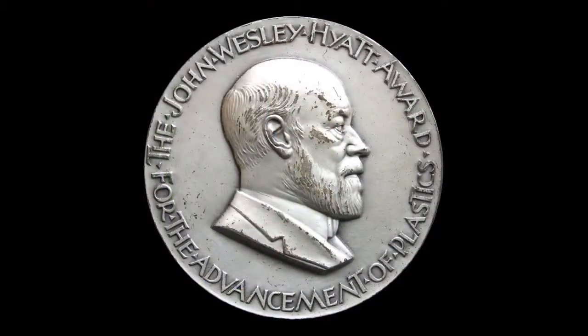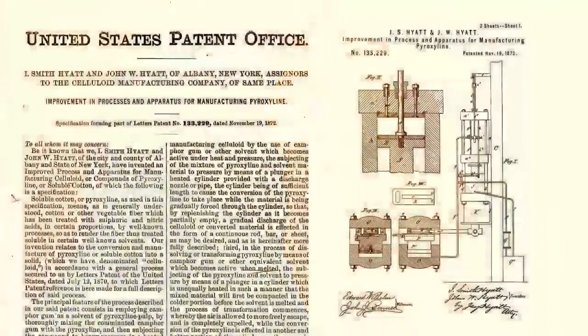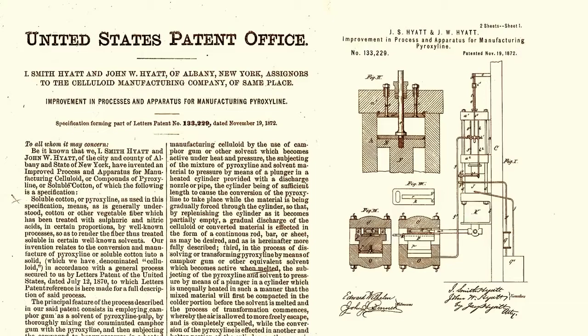This spurred John Wesley Hyatt to develop one of the first plastics, celluloid, to create billiard balls. He patented an apparatus for molding products from celluloid. This apparatus was the birth of plastic injection molding.